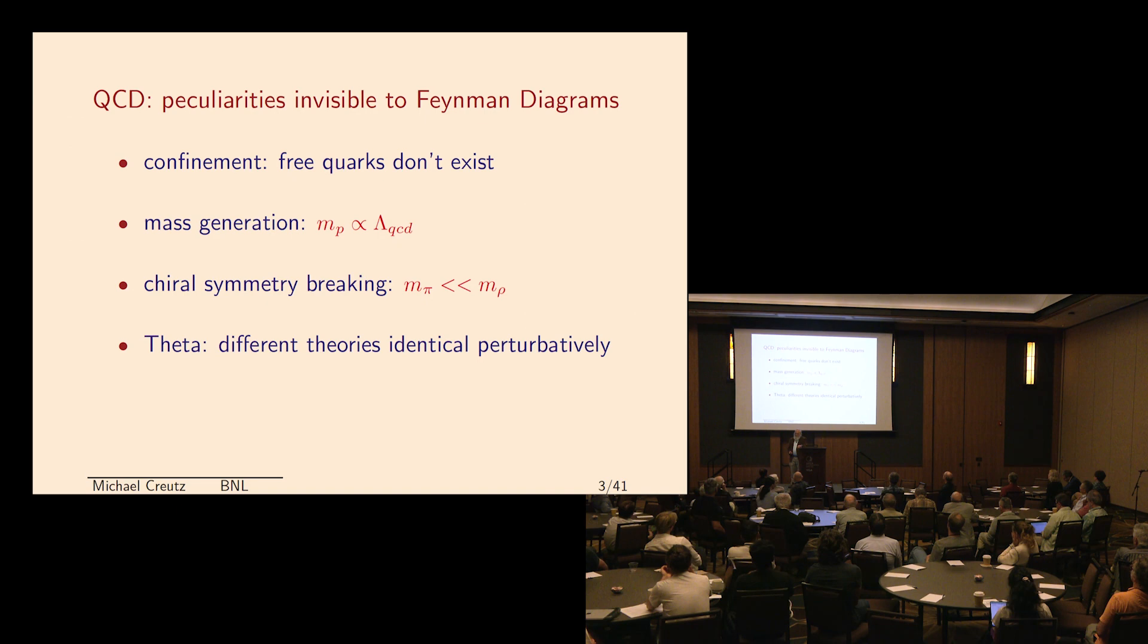But there are a lot of things about QCD that we can't see with Feynman diagrams. First of all is there's this confinement phenomenon that free quarks don't exist, and there's going to be a lot of talk about that by various speakers. Another one is the way masses are generated. The proton mass is proportional to this parameter called lambda QCD, and you can't get that out of perturbation theory. Chiral symmetry breaking - the pion is much lighter than the rho, although they're made of exactly the same quarks. And then there's an interesting point. I said there are no parameters but the quark masses. Well, there is one more, and actually it should be mapped in with the quark masses. That's this parameter called theta.